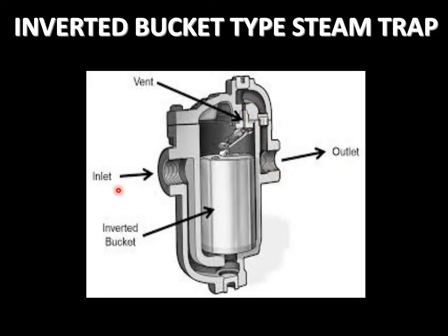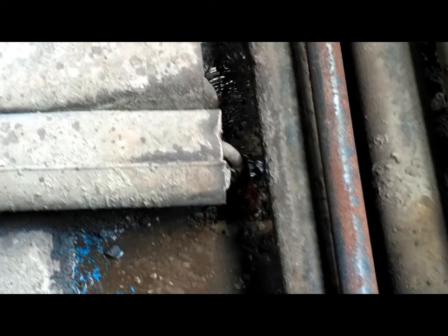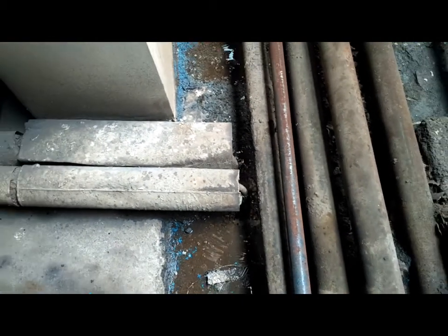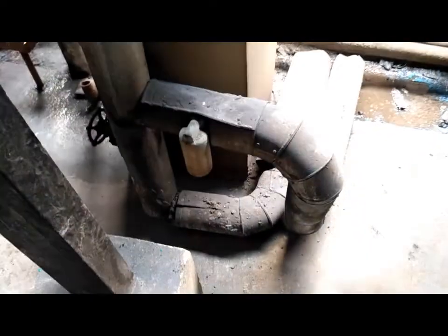Now when we have steam in majority inside this bucket or this steam trap, the bucket will become buoyant and move upwards, and this mechanism will close this port. So the flow of condensate outwards will be stopped. This is an example of an inverted bucket type steam trap.